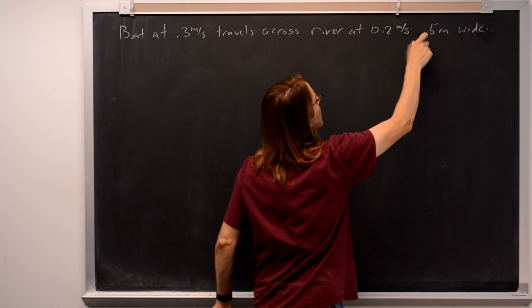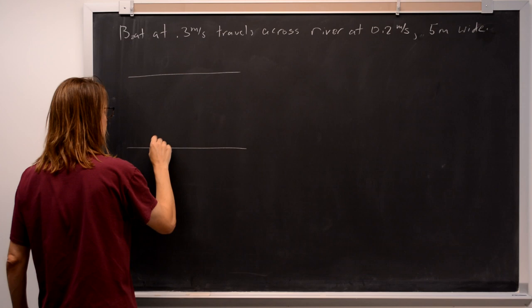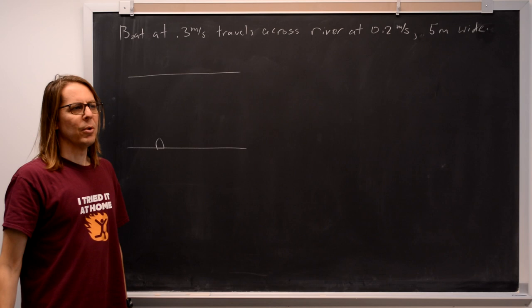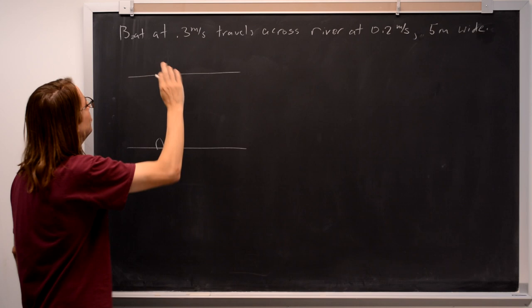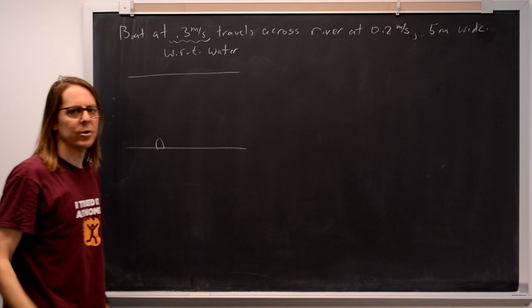So we probably want to start by just drawing it here. There's your river, and we'll say the boat's going to start down here somewhere and try to cross the river. Whenever you say a boat travels at a certain speed, it always means with respect to the water, because the boat travels in the water.